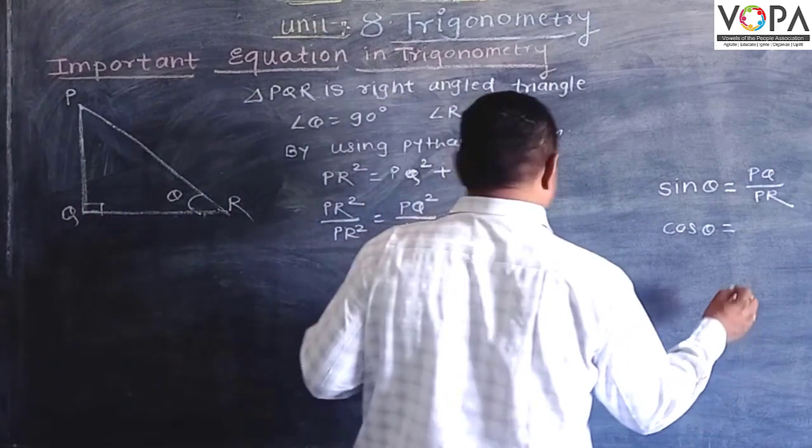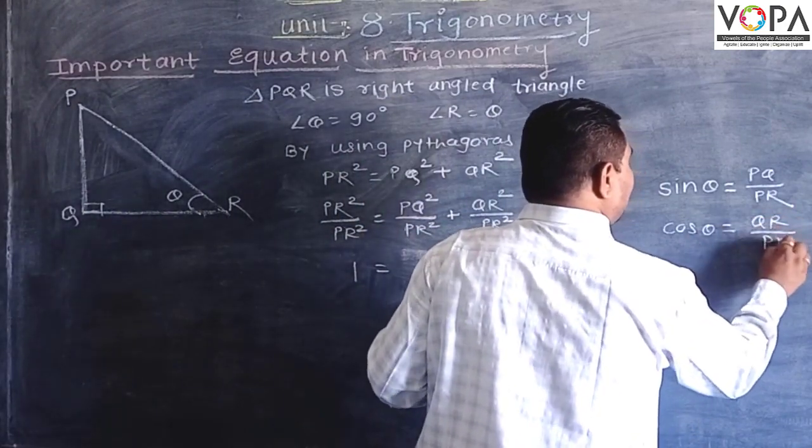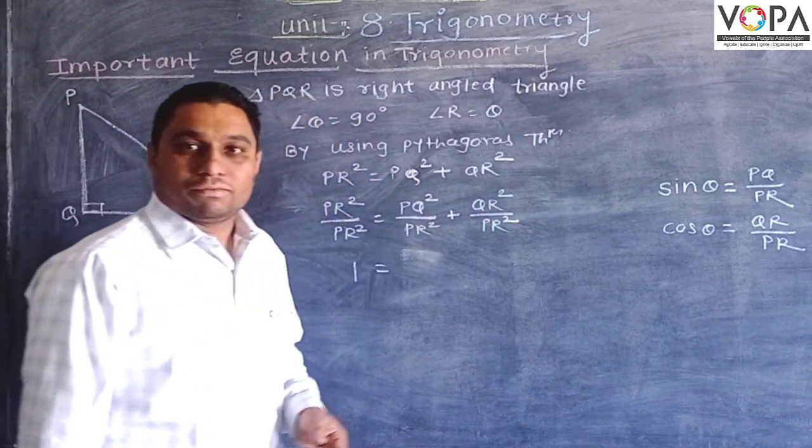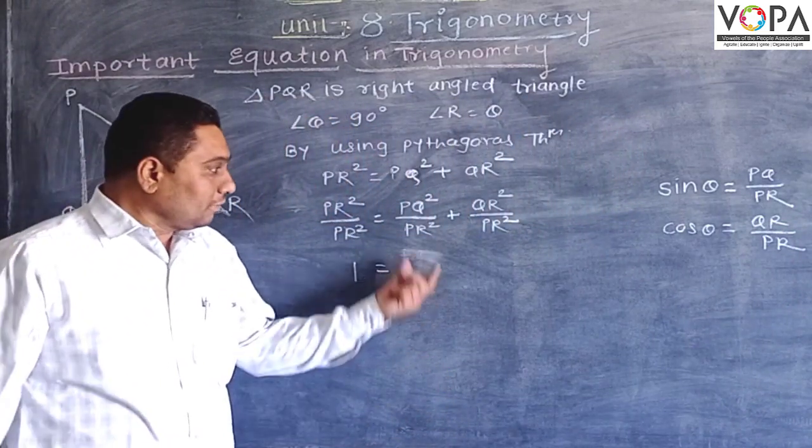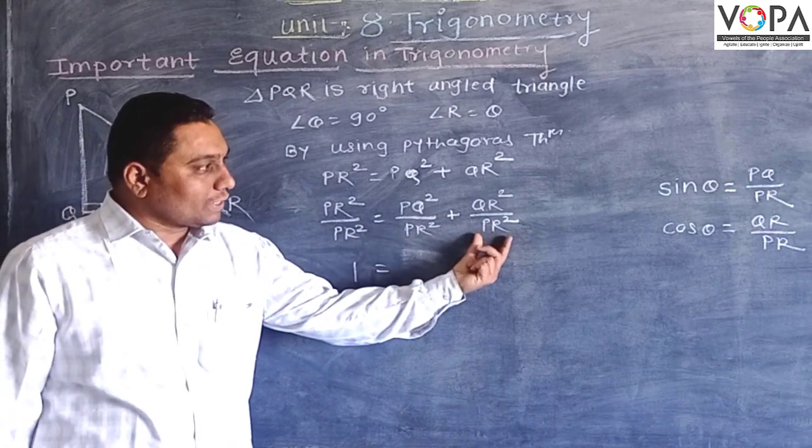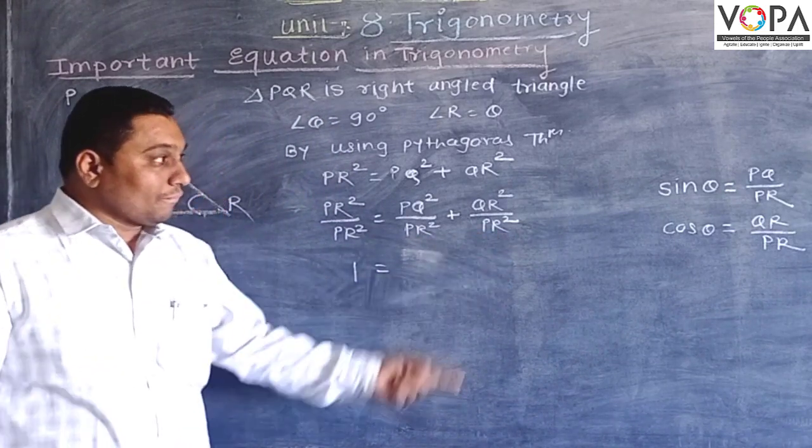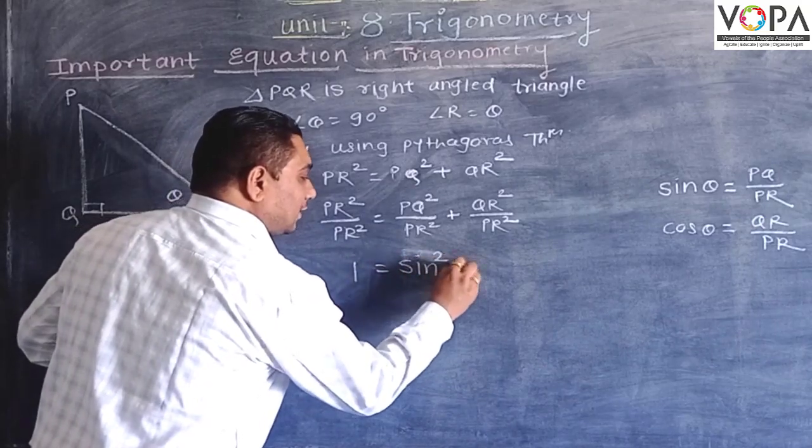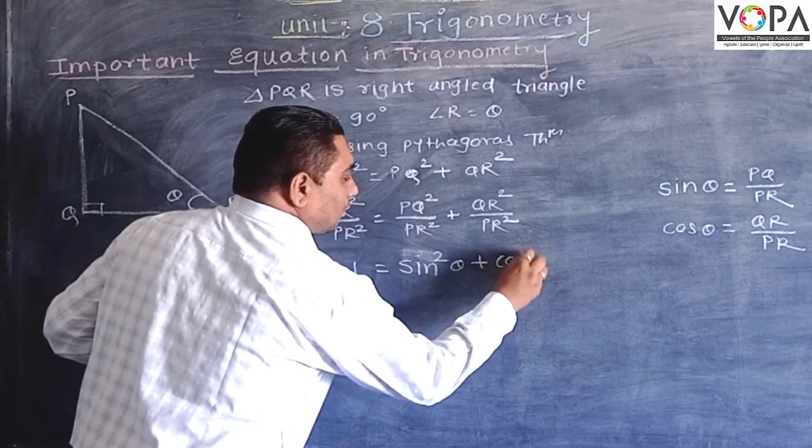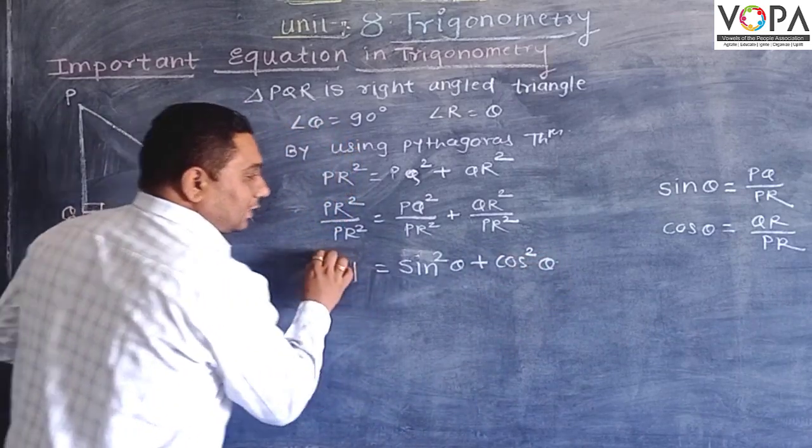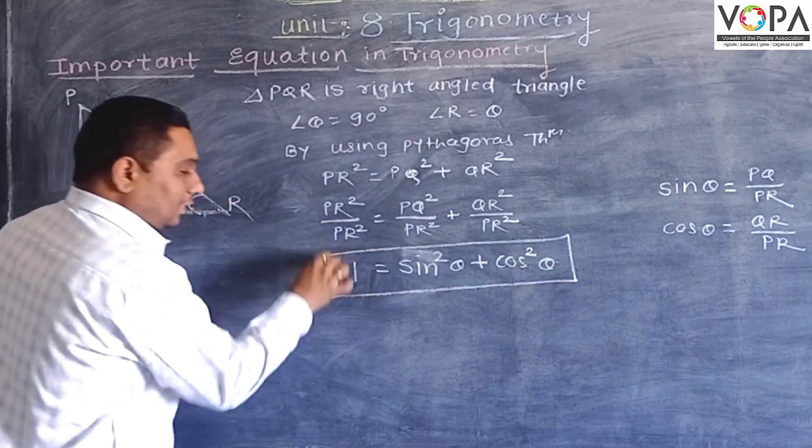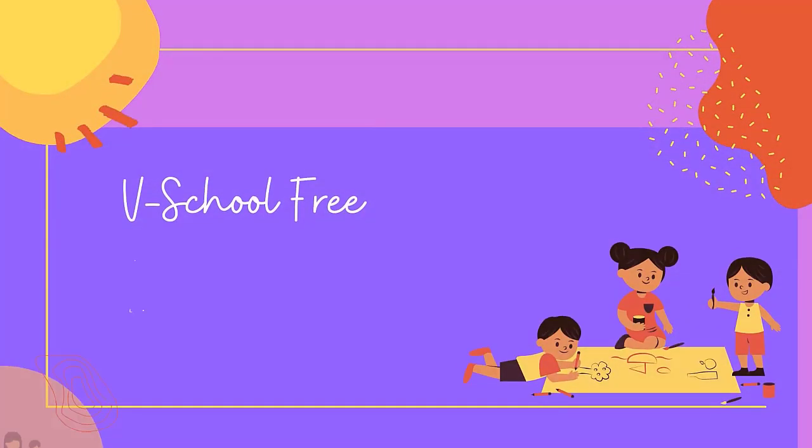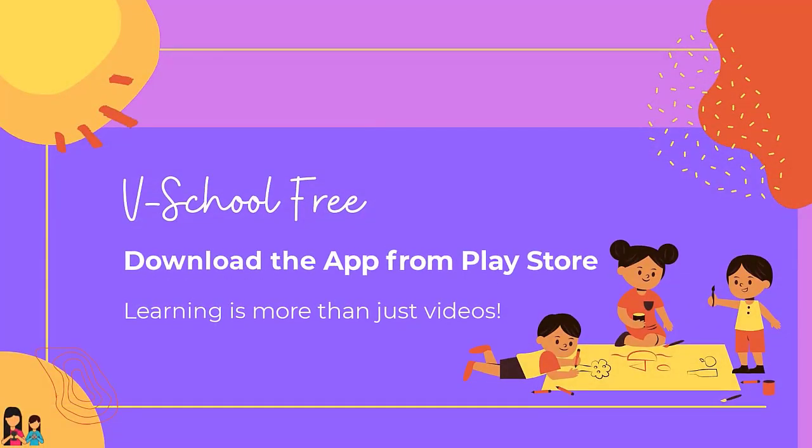These are the values of sine theta and cos theta. So 1 equals sine squared theta plus cos squared theta, and this is our important equation.